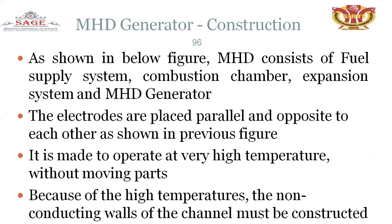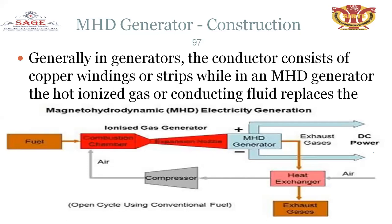The MHD generator is made to operate at very high temperature without moving parts. In a conventional generator, the conductor consists of copper windings or strips, while in the MHD generator, hot ionized gas or conducting fluid replaces them. Fuel passes into the combustion chamber, then through an expansion module, creating high-velocity flow into the MHD generator.